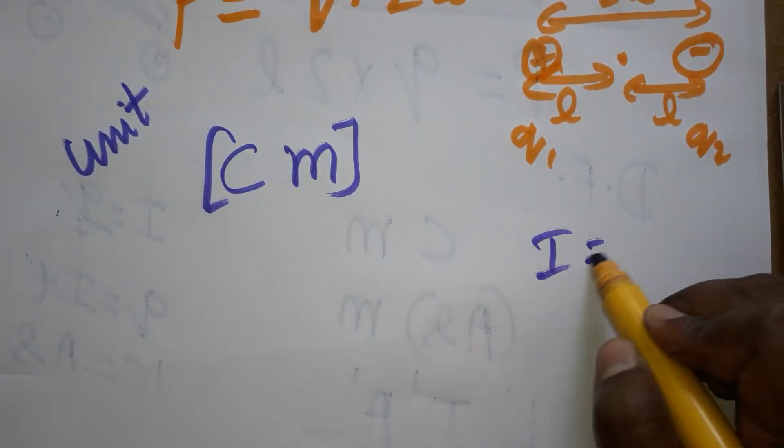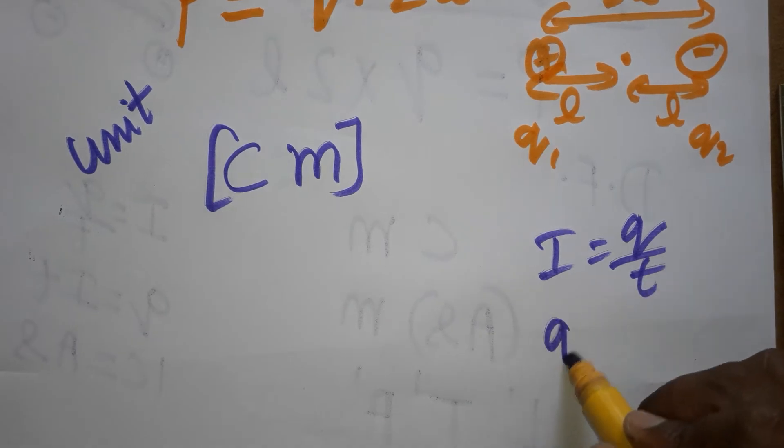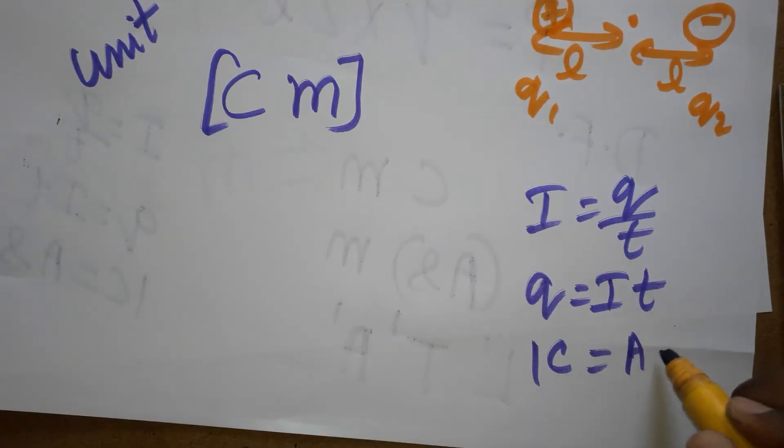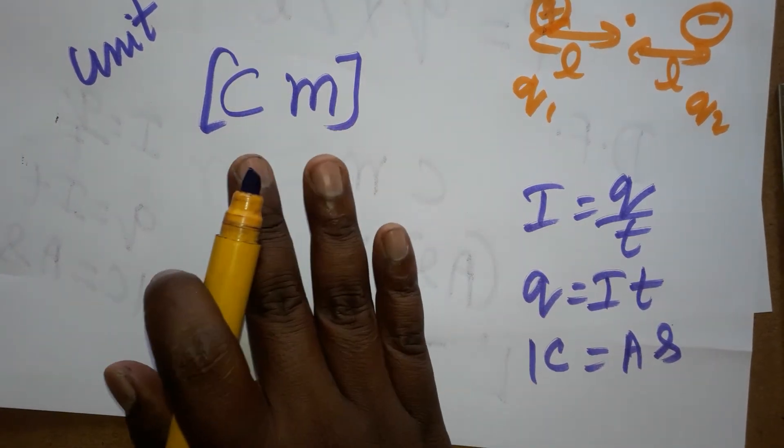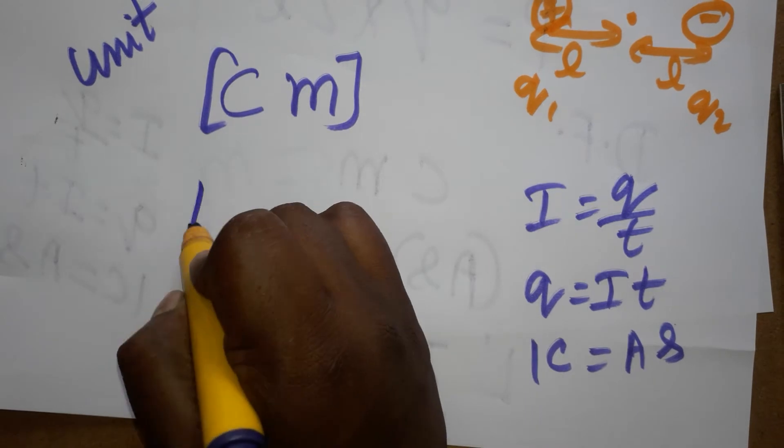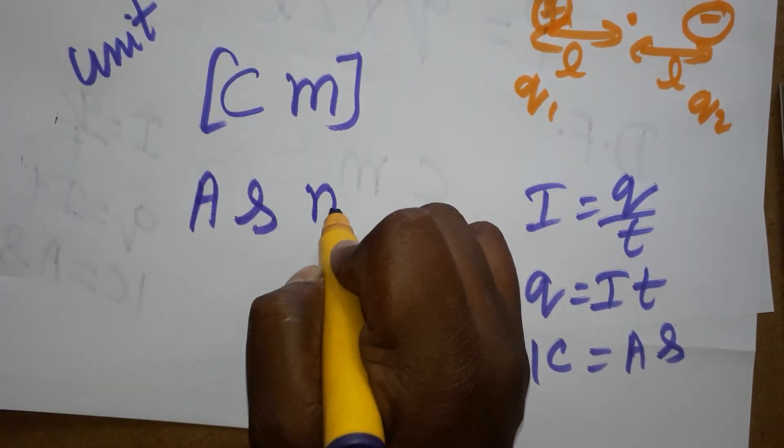Now, current equals charge by time, so charge equals current into time. Charge is coulombs, current is ampere, time is second. Because coulombs doesn't have a dimensional formula, I am converting coulombs as ampere into second. So ampere, second, meter.